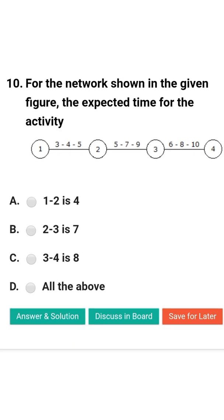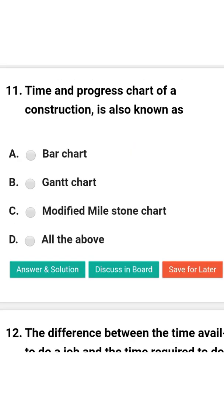Next question: For the network shown in the given figure, the expected time of the activity — option A: 1-2 is 4; option B: 2-3 is 7; option C: 3-4 is 8; option D: all of the above. The correct answer is option D: all of the above.